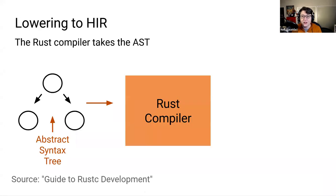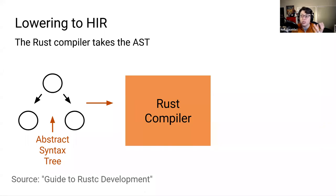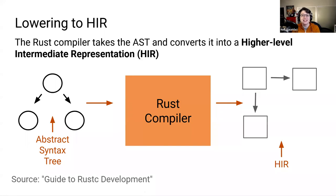Then the compiler, after these steps, takes that abstract syntax tree — which has had macros expanded, been desugared, and had all imports resolved — and converts it into a higher-level intermediate representation, or HIR.